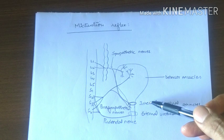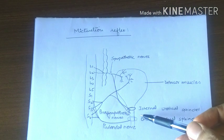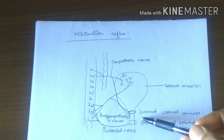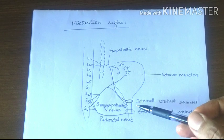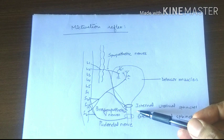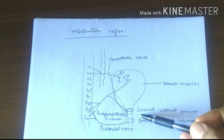They cause contraction of detrusor muscles and relaxation of internal urethral sphincter. Now urine enters the urethra, and there is stimulation of stretch receptors in the urethra, which also sends afferent impulses to the spinal cord via pelvic nerves.